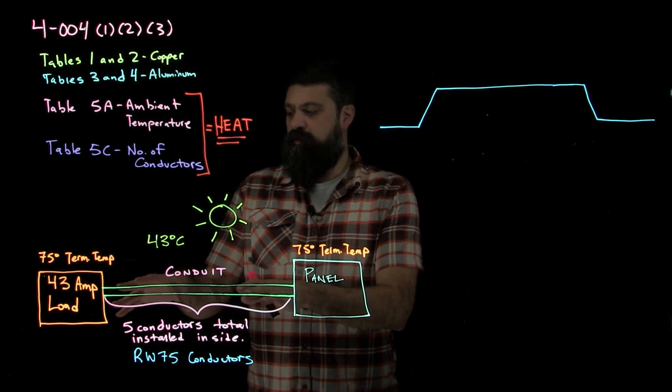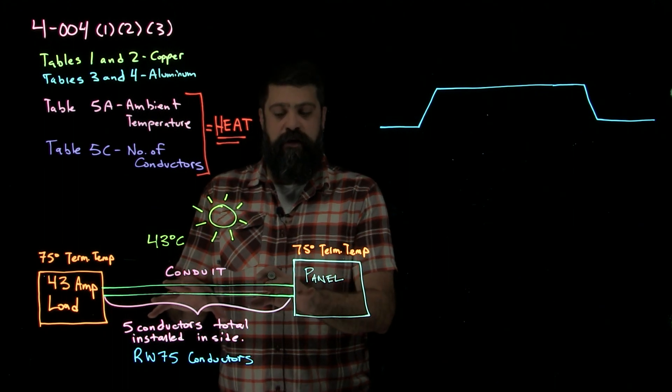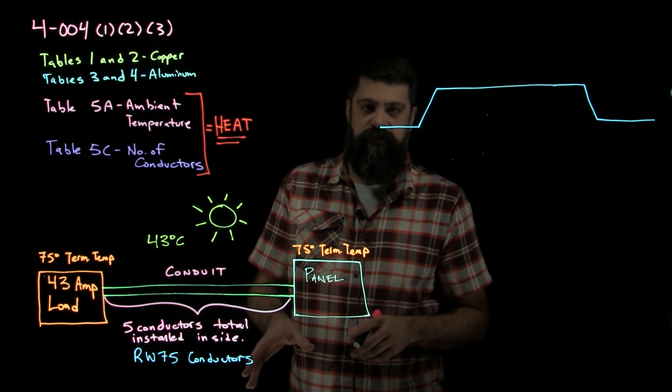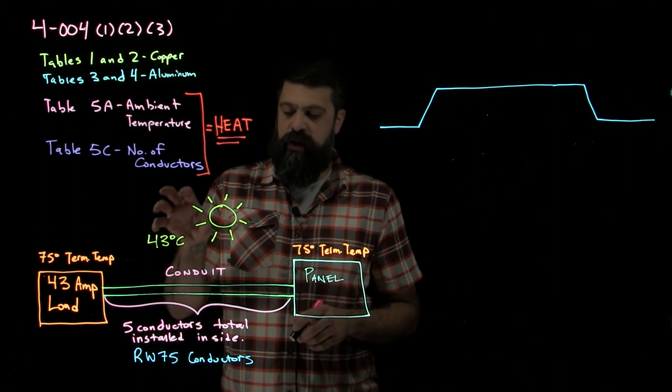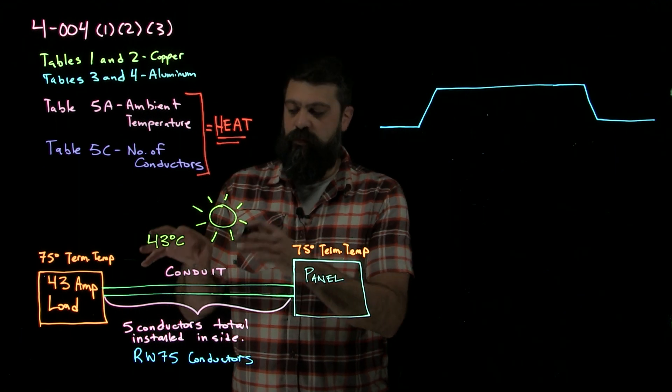So this is our situation that we have here. I have a 43 amp load that is being fed in a conduit. There's five conductors total inside here. We have RW75 conductors that we're looking at as well as these conductors are going to be exposed to a temperature of 43 degrees Celsius.